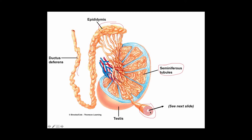Within the walls of the seminiferous tubules there are two cell types: the developing spermatogonia — the immature developing sperm — and Sertoli cells. A third important cell type is found in the connective tissue of the testes. These are called Leydig cells, and they are responsible for producing testosterone, which has many functions in the male reproductive system and in the male body generally.